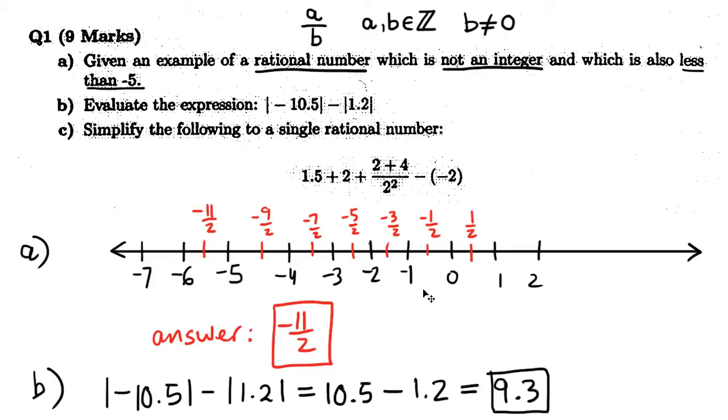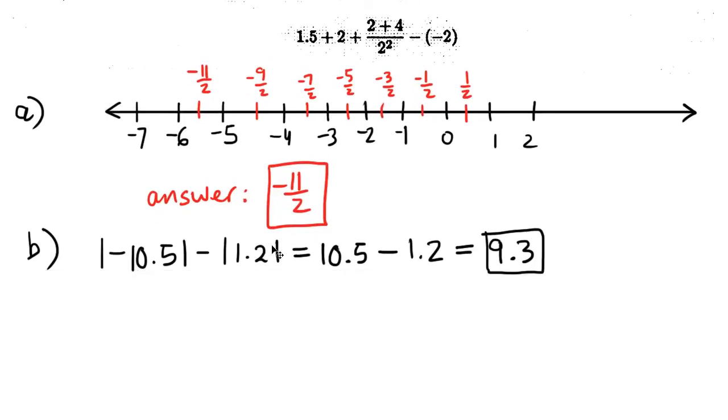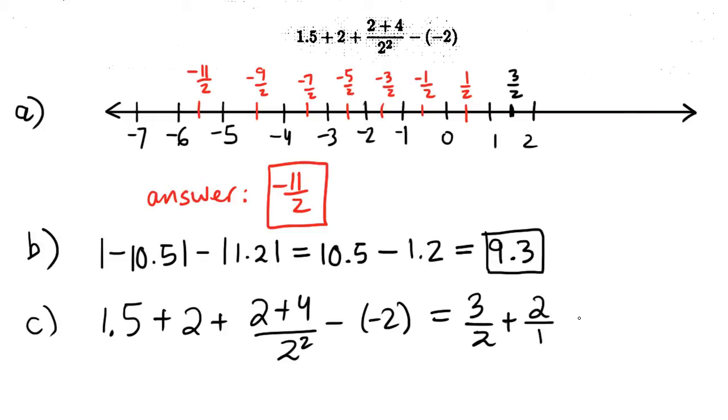And now we have to simplify this expression to a rational number. We could use our calculator, but they probably would prefer us to just do it by hand. How about we do it by hand and then we'll check it on the calculator. I'll just recopy the expression. Actually, I'm going to change everything into a fraction. This decimal, I'm going to make it into a fraction. 1.5, that's 3 over 2. How about I write 2 and make it look like a fraction by putting it over 1? 2 plus 4 is 6. 2 squared is 4. And minus minus 2 is really plus 2. And why don't I make that look like a fraction by putting it over 1?